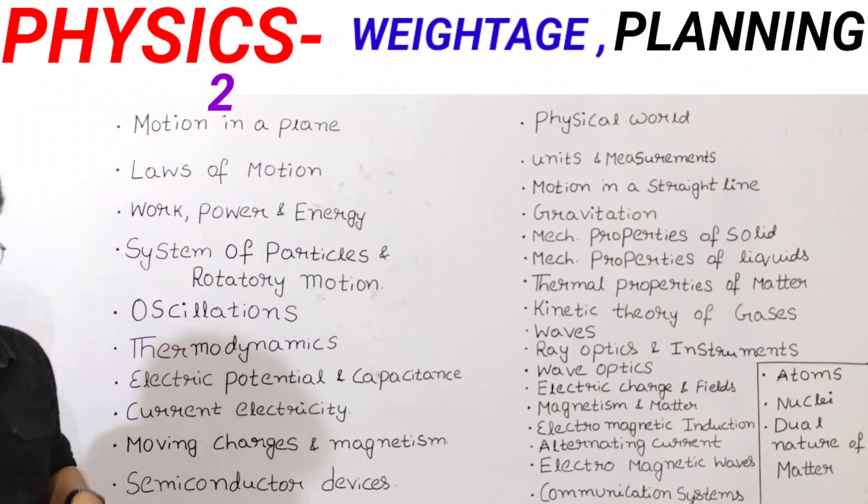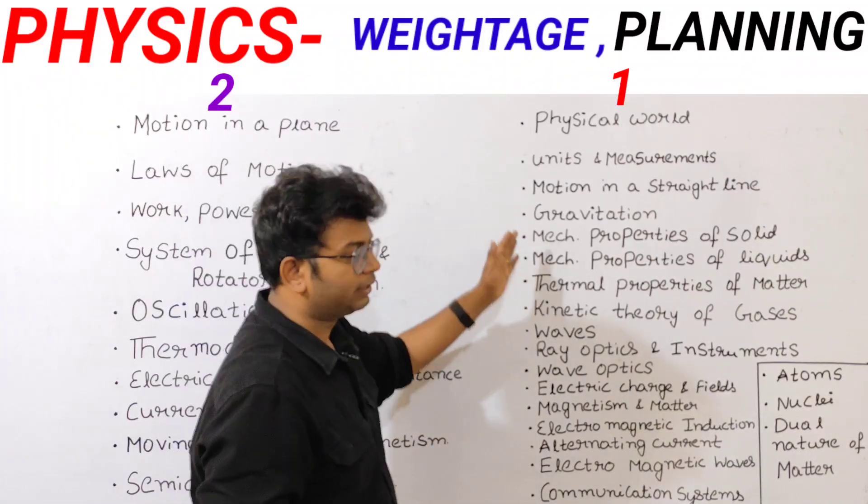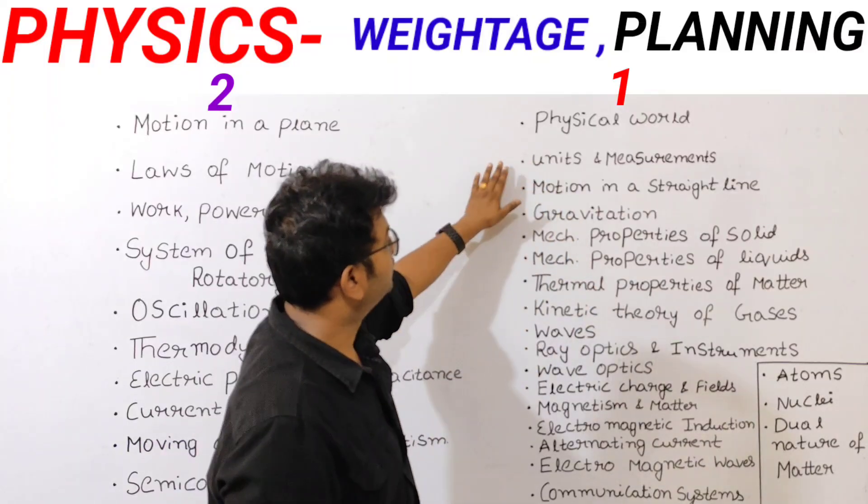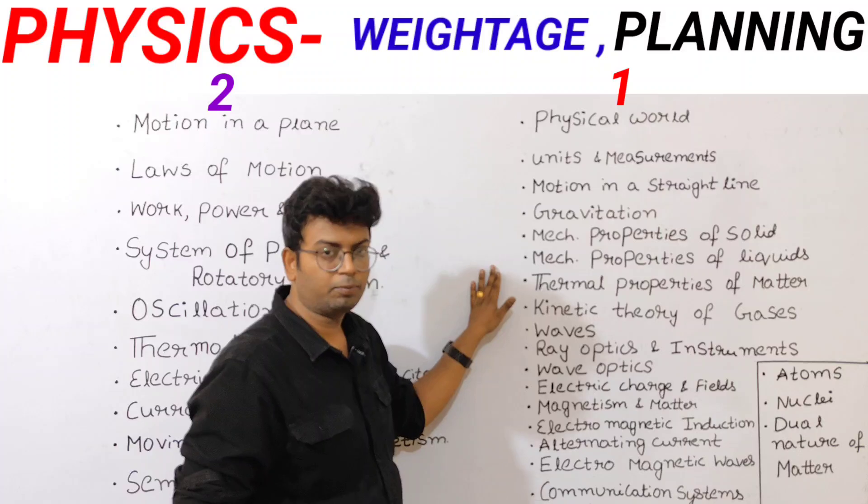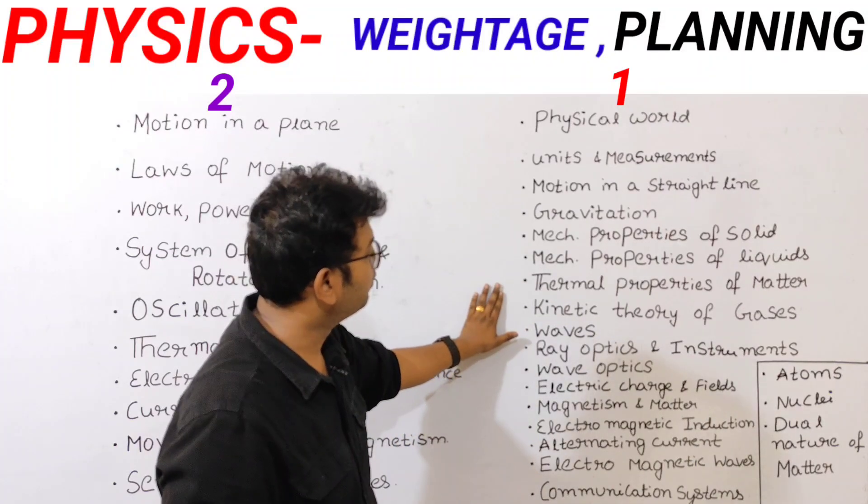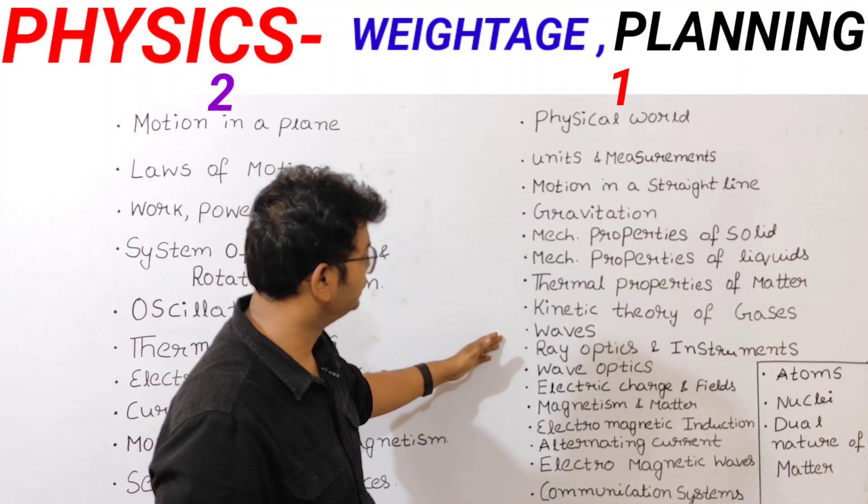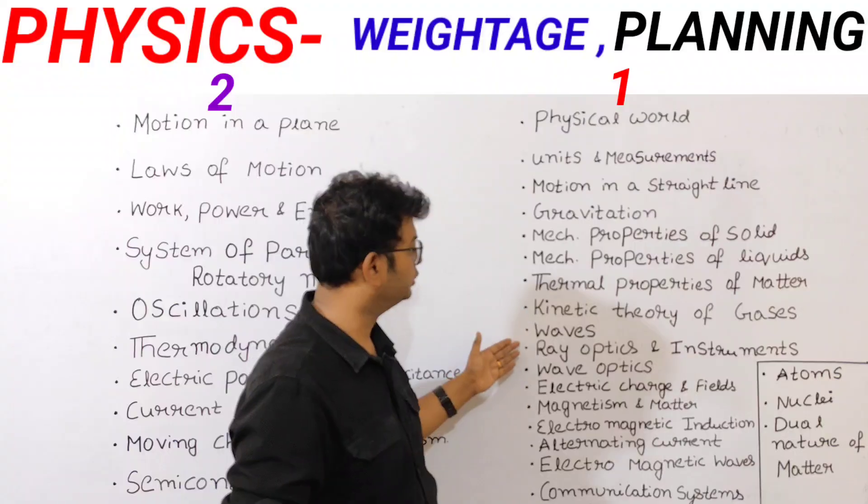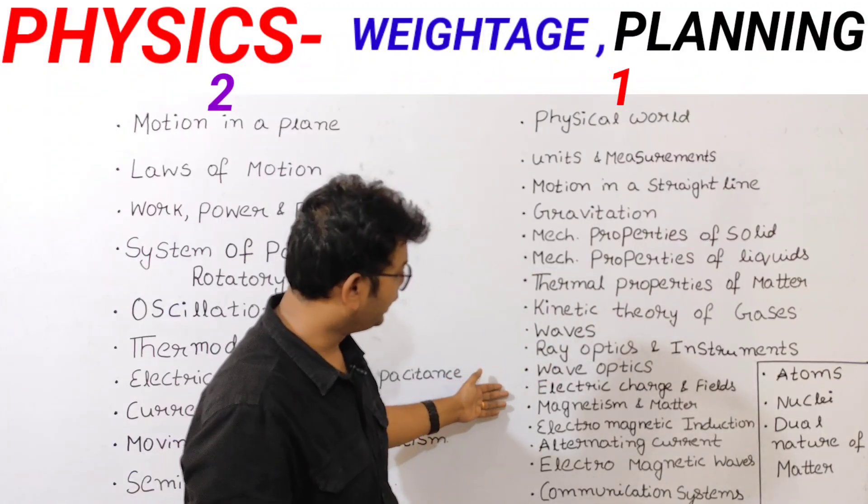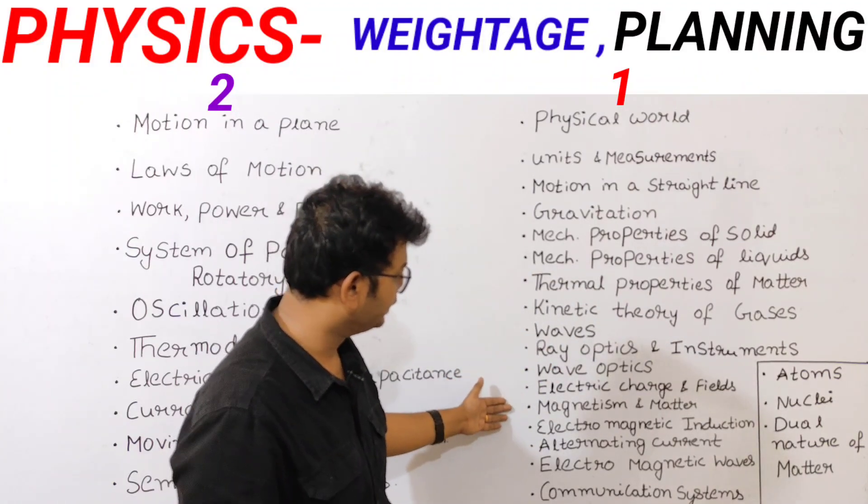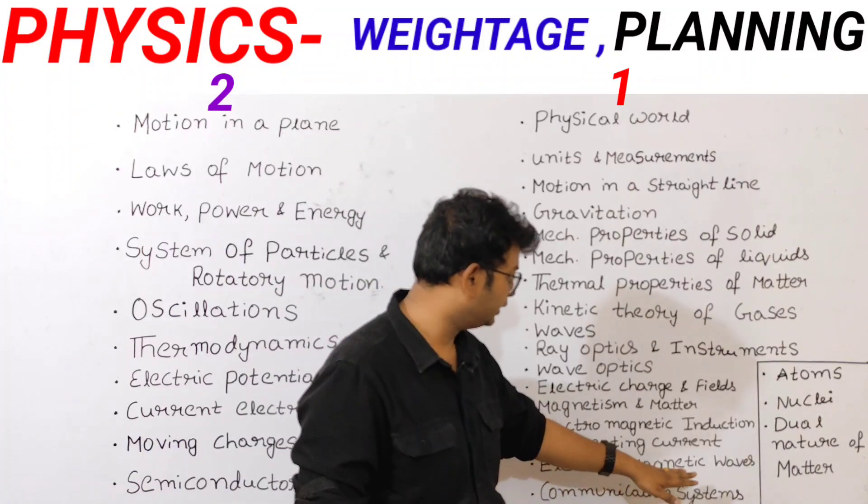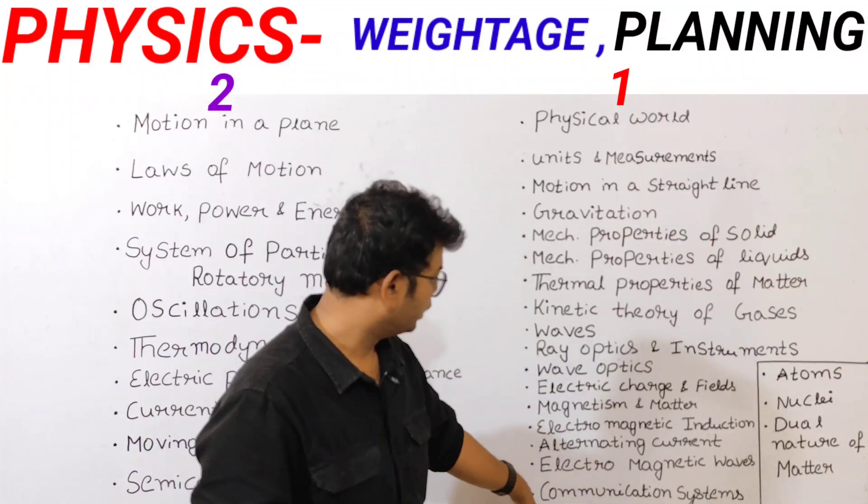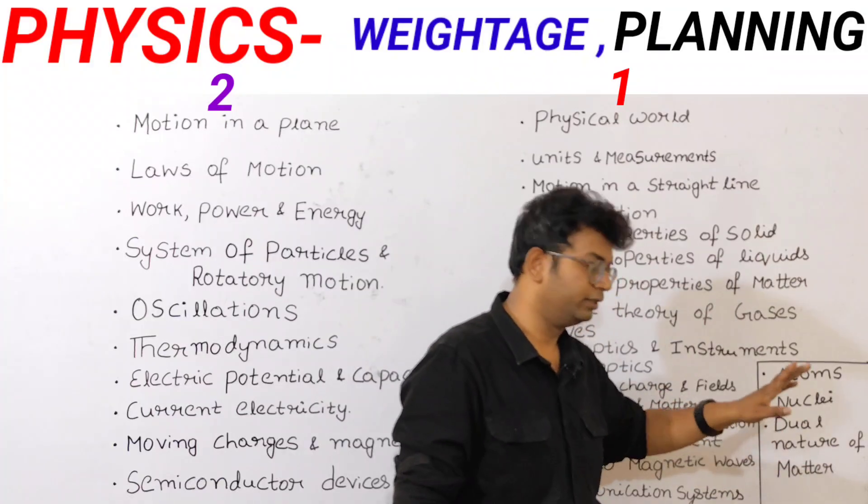This is the second part. Gravitation, mechanical properties of solids and mechanical properties of liquids and thermal properties of matter, kinetic theory of gases, waves, ray optics and instruments, wave optics, electric charges and fields, magnetism and matter, electromagnetic induction, alternative current, electromagnetic waves, communication system, atoms, nuclear, dual nature of matter. This is one mark.